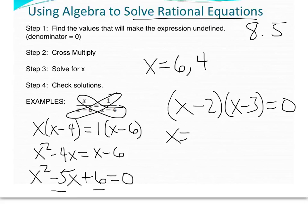So x equals 2 and x equals 3. Now let's quick check that. If I plug in 2, I'm going to have 2 over 2 minus 6, which is negative 4, equals 1 over 2 minus 4, which is negative 2. Well, we know that this simplifies to negative 1 half, so we're all good.